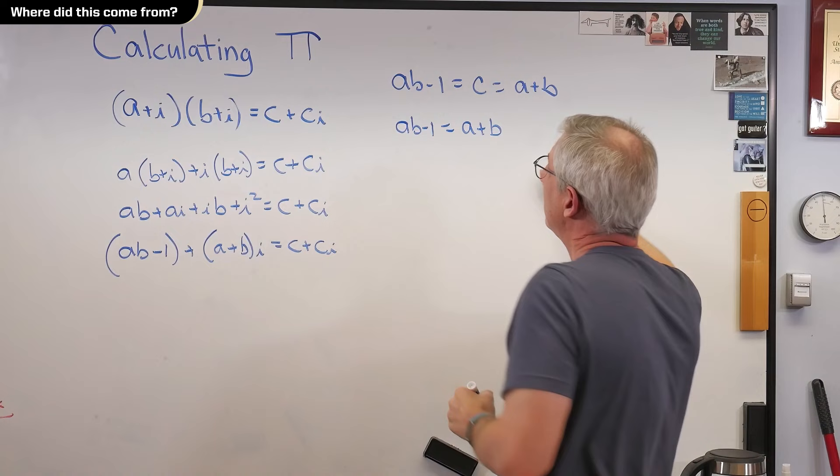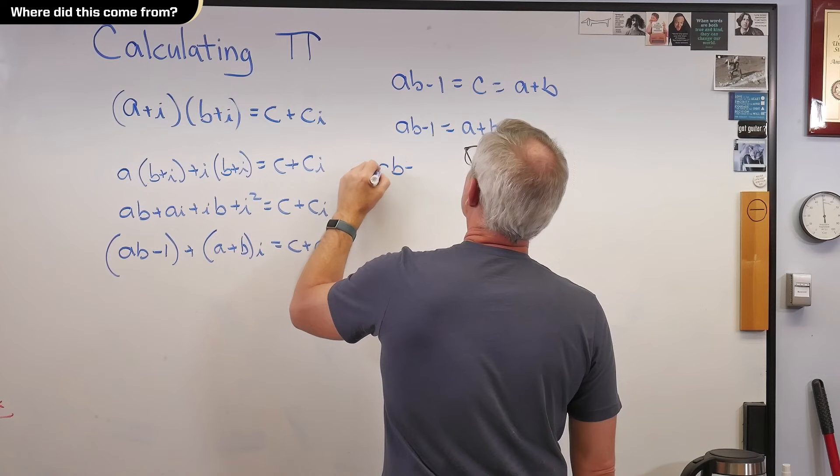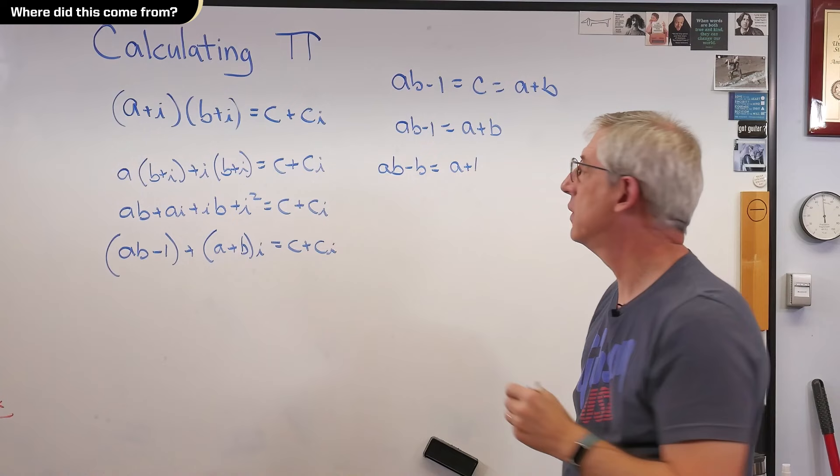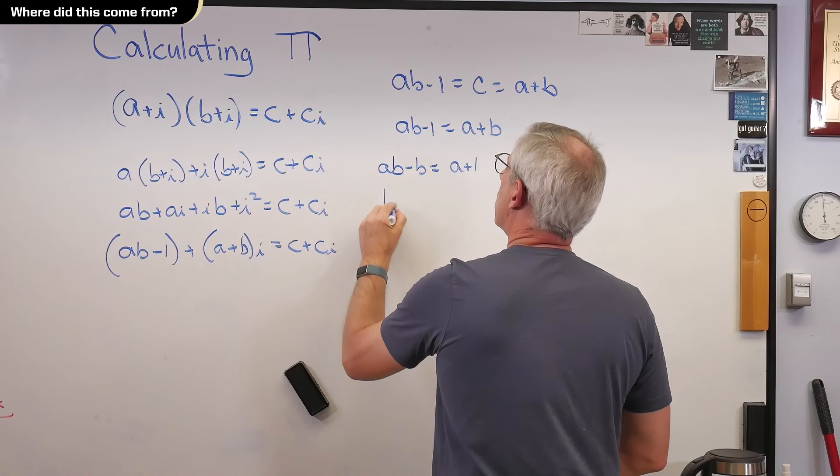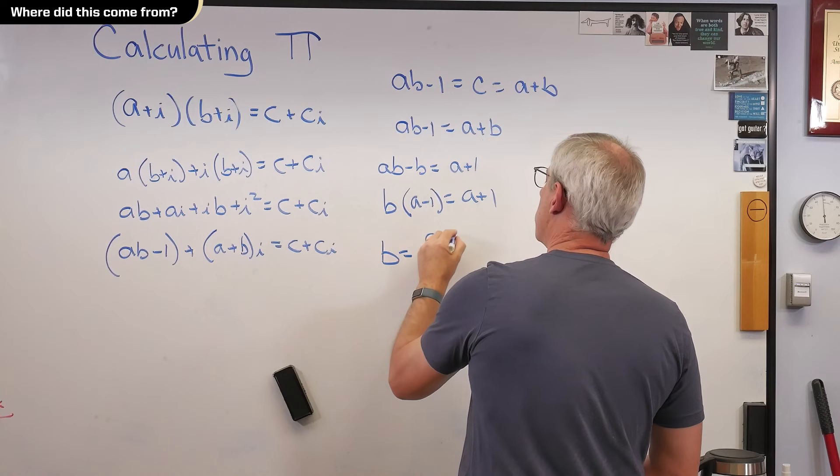If I knew a, could I calculate b? Yes. Let's try that. So, let's see, b minus, or ab minus b equals a plus 1, right? So, again, b times a minus 1 equals a plus 1, and finally, b equals a plus 1 over a minus 1.